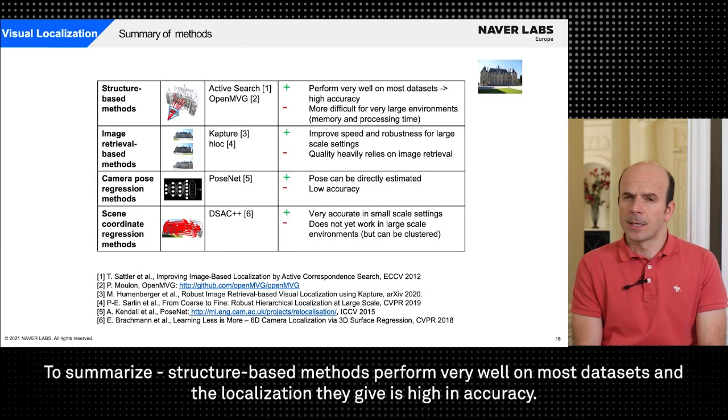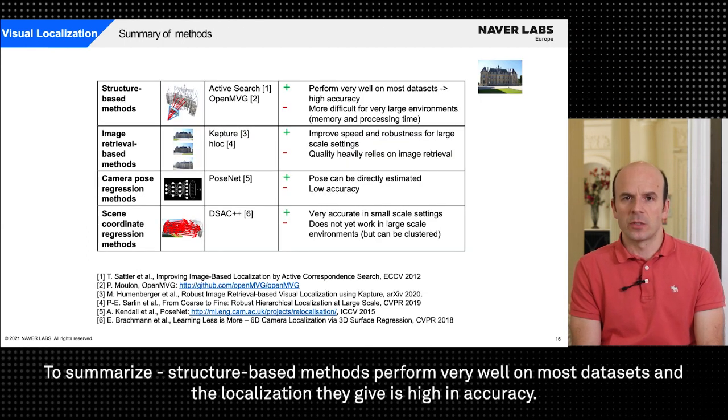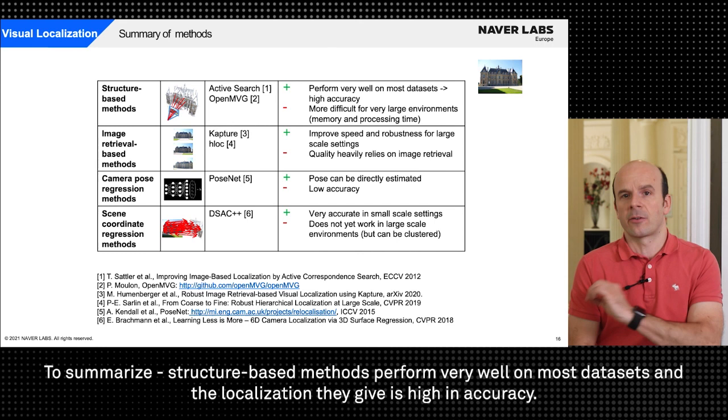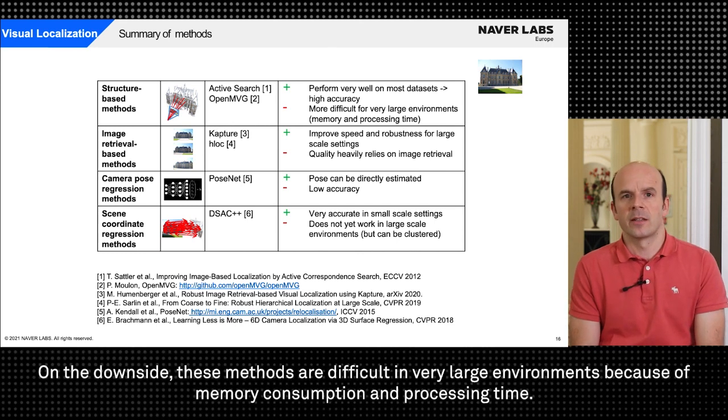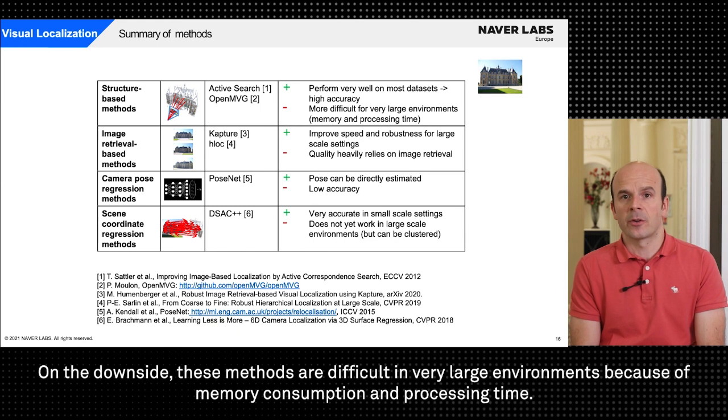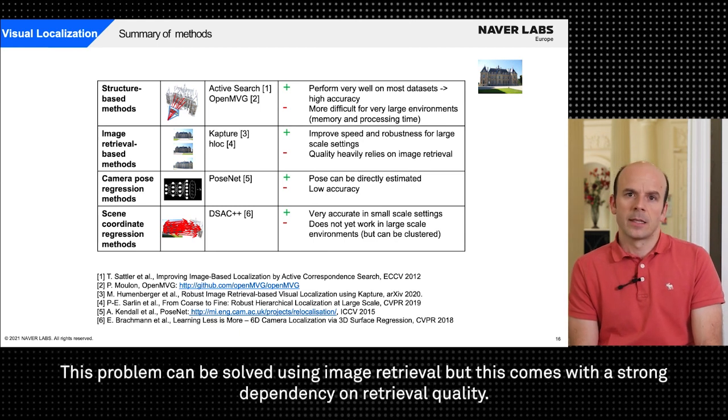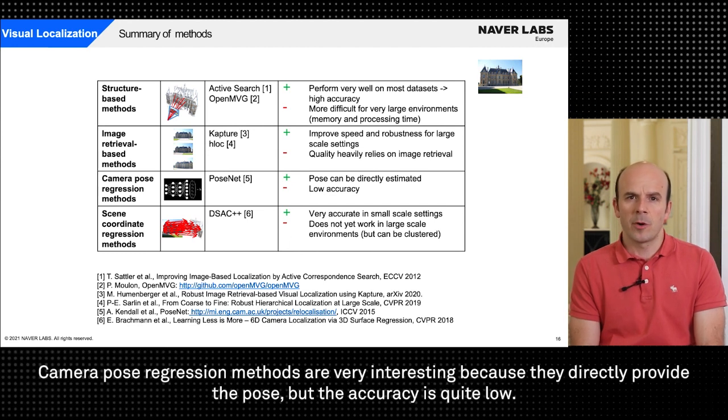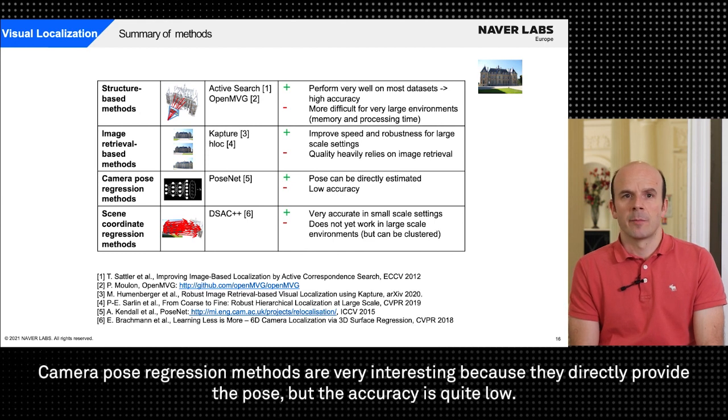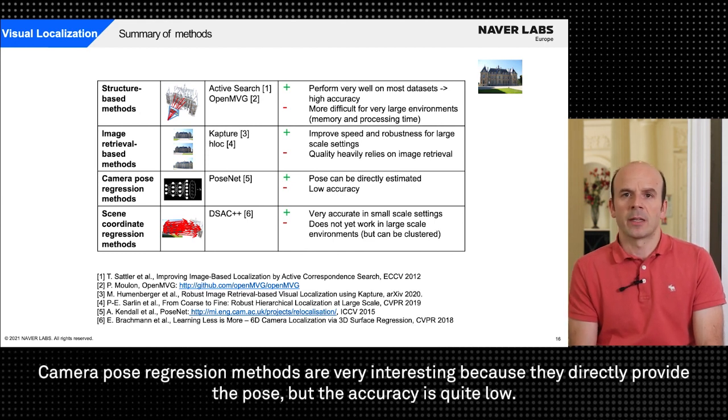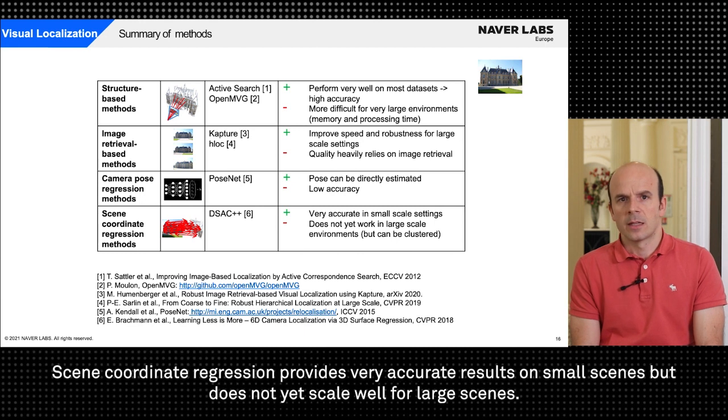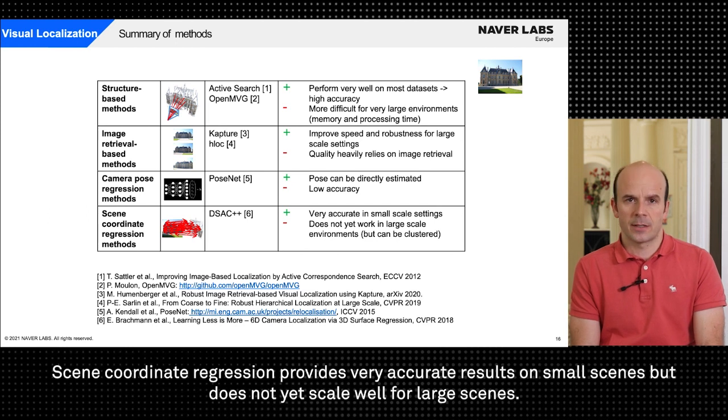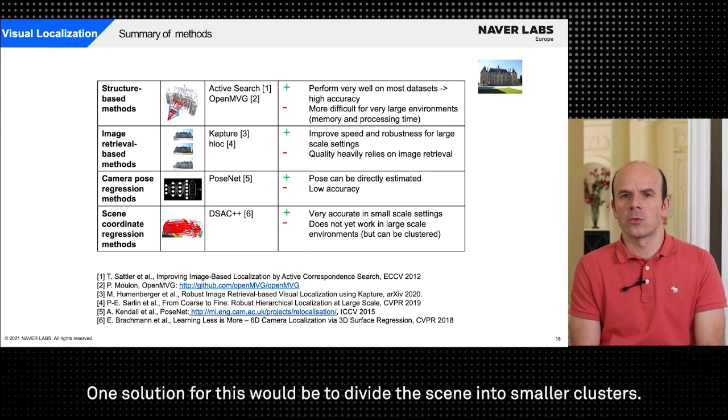To summarize, structure-based methods perform very well on most datasets and the localization accuracy is high. On the downside these methods are difficult in very large environments because of memory consumption and processing time. This problem can be solved using image retrieval but this comes with a strong dependency on retrieval quality. Camera pose regression methods are very interesting because they directly provide the pose but the accuracy is quite low. Scene coordinate regression provides very accurate results on small scenes but does not yet scale well for large scenes. One solution for this would be to divide the scene into smaller clusters.